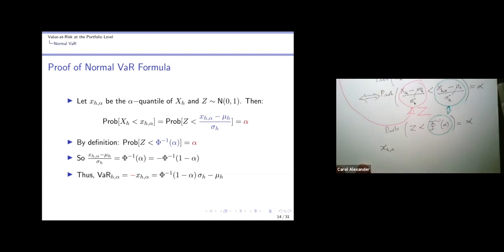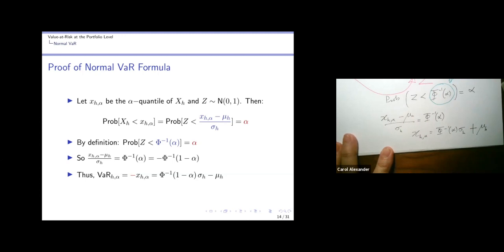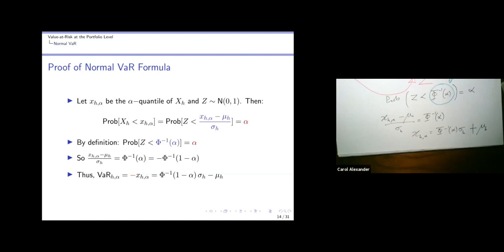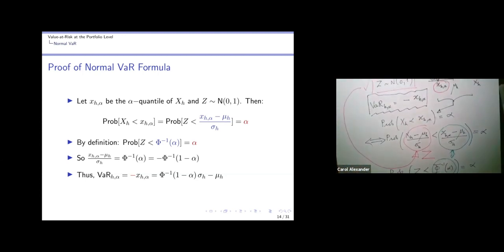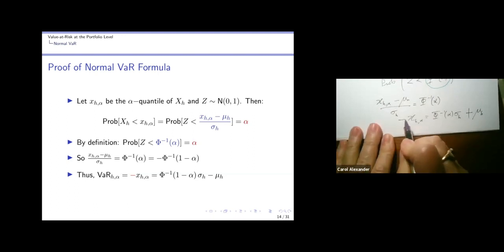In other words, x_H alpha, which is what we want to find, minus mu over sigma_H is phi to the minus one of alpha. Or put another way, x_H alpha is phi to the minus one alpha times sigma_H plus mu_H. But we don't want VaR to be X. VaR is minus of that. So we need to multiply it by minus one. So we've got a minus here and a minus there and a minus there. And that's the formula.